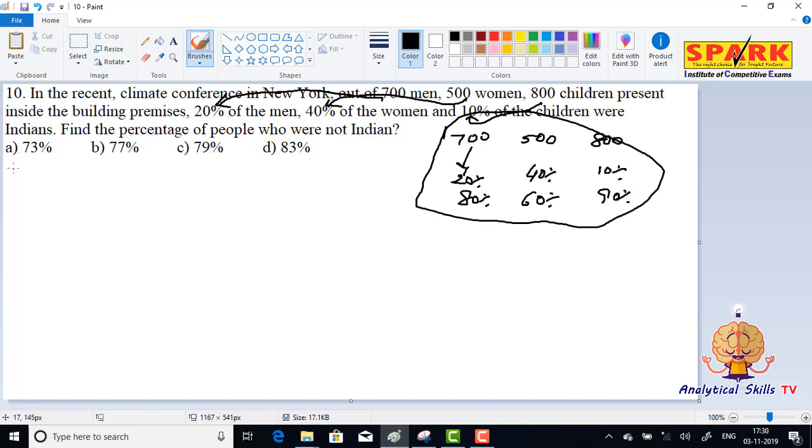Let me calculate the number of men. Indian men equals 700 into 20 by 100, so that's 140. Therefore, other men equals 700 minus 140, which is 560.